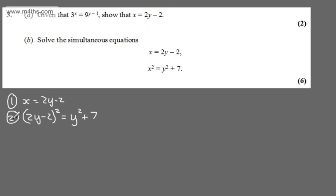So expanding the bracket in equation 2, we'll have 4y squared minus 4y minus 4y, which is minus 8y, plus 4 will be equal to y squared plus 7. If we subtract y squared from both sides and subtract 7 from both sides, we'll have 3y squared minus 8y minus 3 is equal to 0.